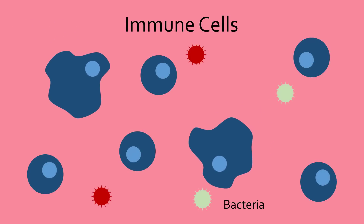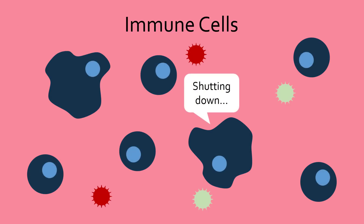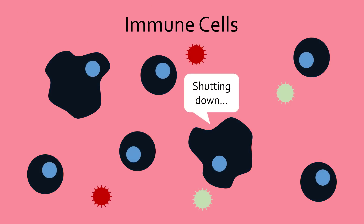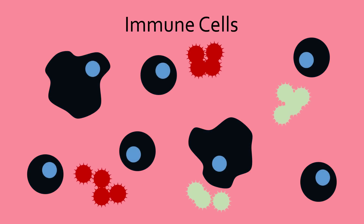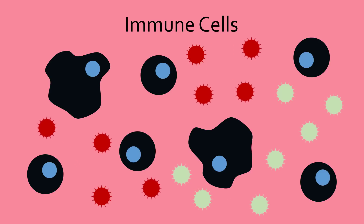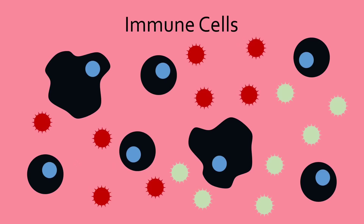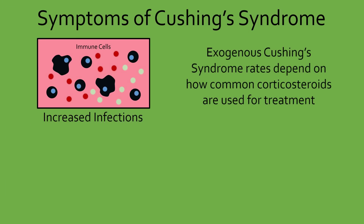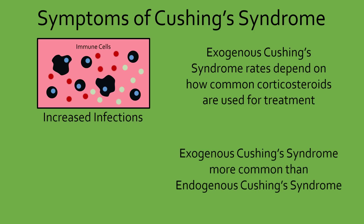However, too much corticosteroid medication can over-inhibit the body's natural defenses and result in one of the symptoms of Cushing's syndrome – increased risk of infections. The incidence of exogenous Cushing's syndrome varies depending on the incidence of the diseases the medication is treating, but it is more commonly seen than endogenous Cushing's syndrome.